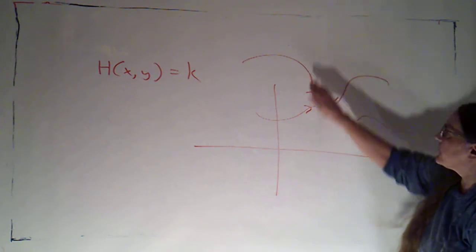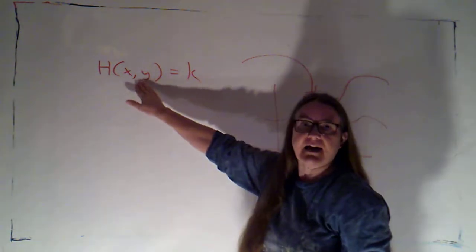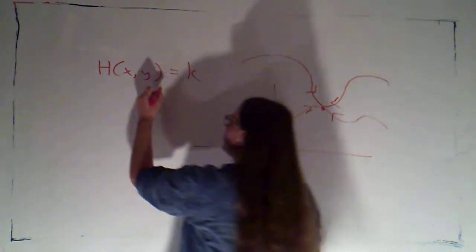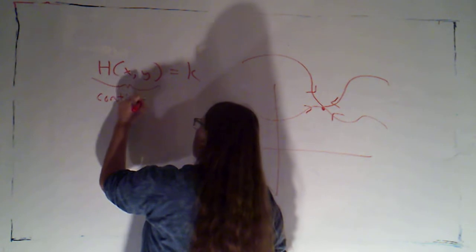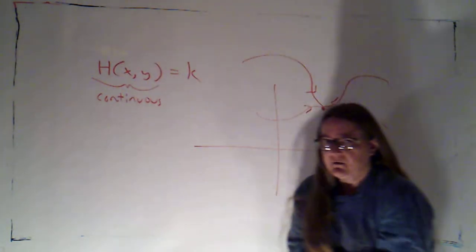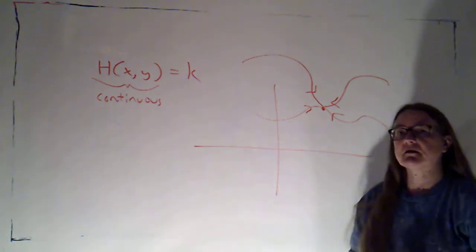Well, all of these solution curves have to be level curves for this function h. And I know that this function must be a continuous function. Now, I know that because in order for the method of Hamiltonian systems to work, I used, in checking to see whether it's Hamiltonian, I checked for the equality of mixed partials.